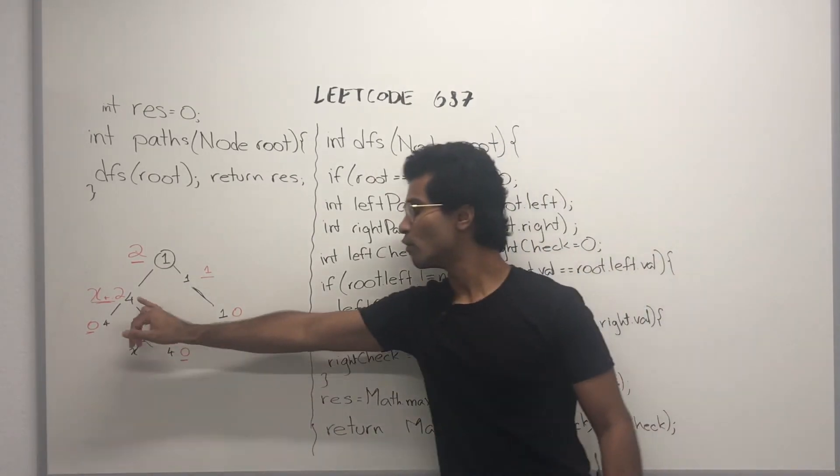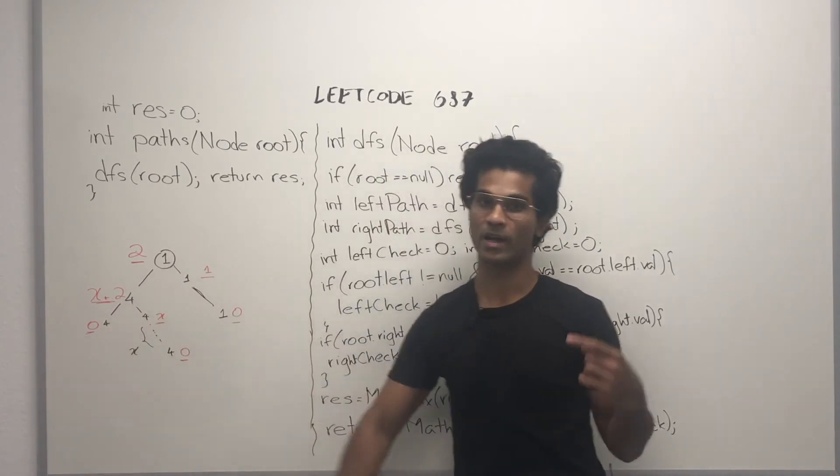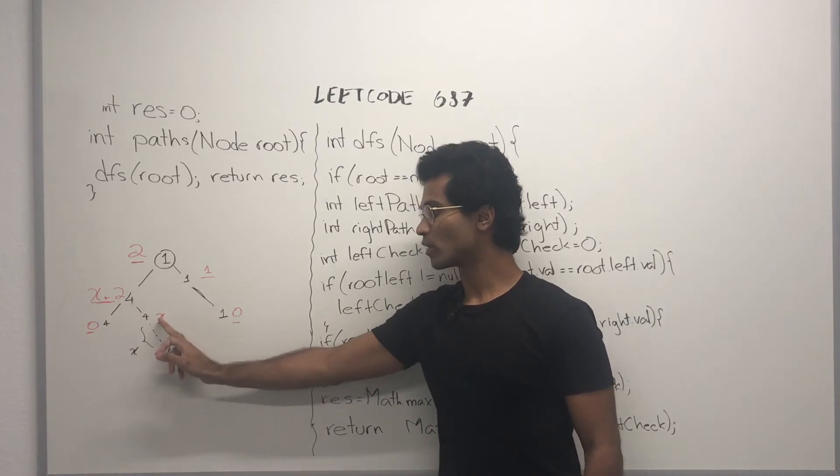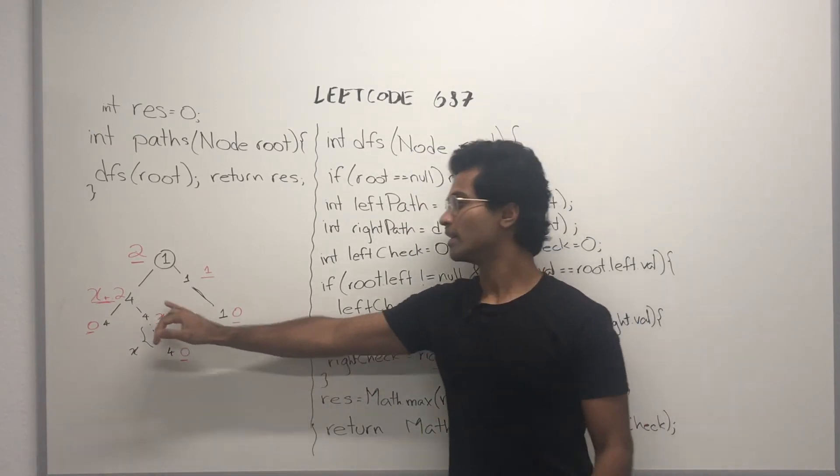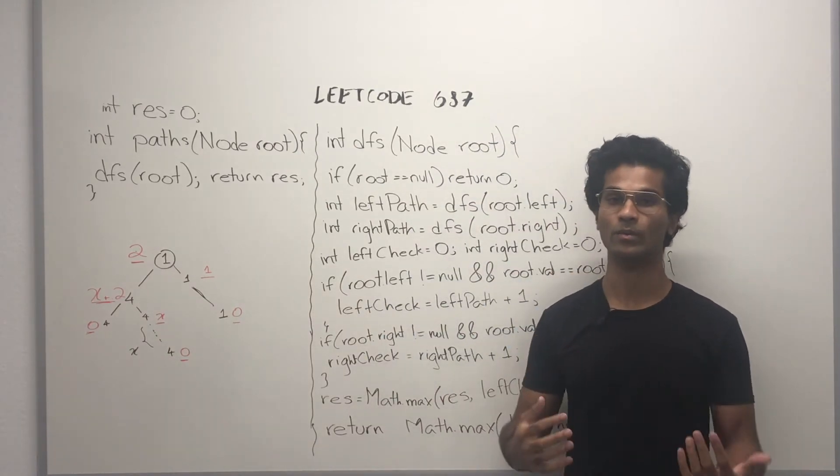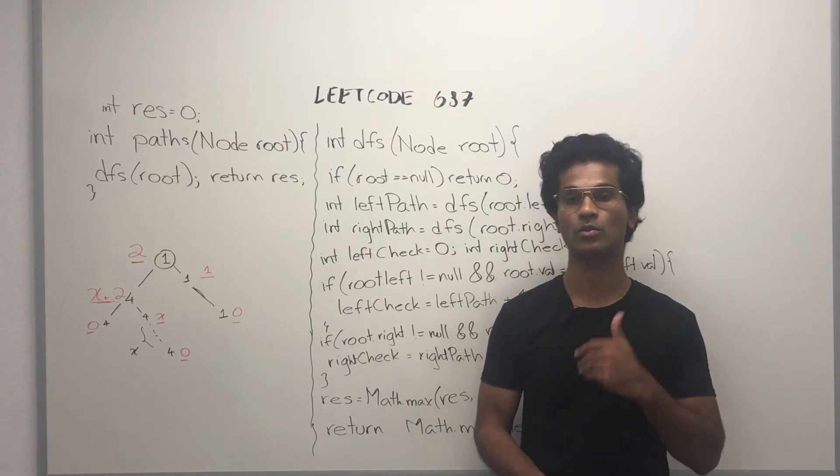So in this case, 4 is going to get 0 from its left child and it's going to add 1. In this case, 4 is going to get x from its right child and it's going to add 1. That's why this node, this 4 is going to say x plus 2 because it's actually doing 0 plus x plus 1 plus 1.